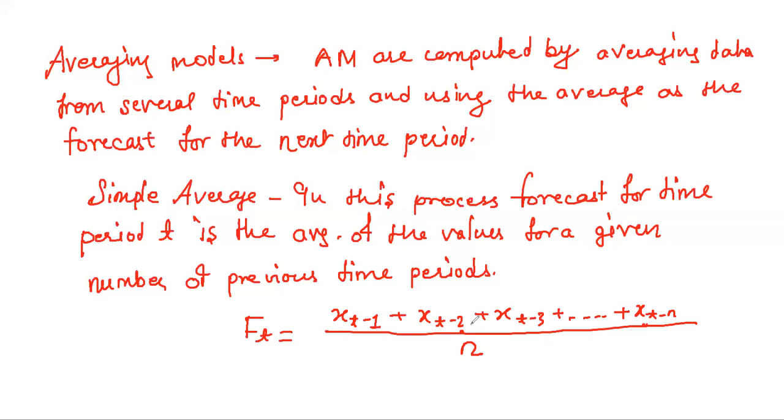The forecasting model F_T is given by x_(T-1) plus x_(T-2) plus x_(T-3) plus x_(T-n) divided by n. This is simple averaging model.